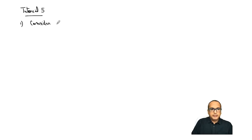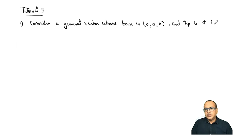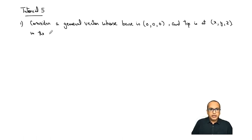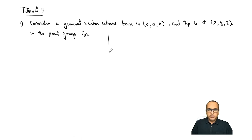Consider a general vector whose base is at the origin (0, 0, 0) and whose tip is at any general given point (x, y, z). The overall environment of the vector is in the point group C2h. I am picking a relatively easy system, but you can work out similar problems in different point groups. We have a right-handed coordinate system with x, y, z.